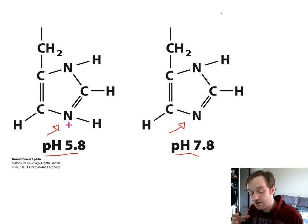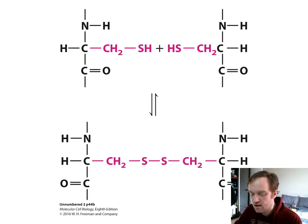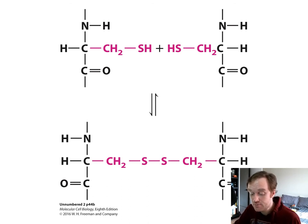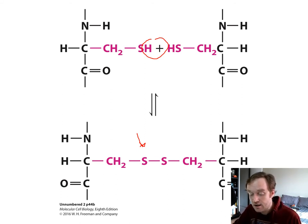pH is very important in maintaining the actual function, structure, and activity of proteins. In addition to dehydration reactions, two adjacent sulfhydryl groups can also be oxidized. When this oxidation reaction occurs, each releases a proton and an electron, forming a covalent disulfide bond. These two side chains release a proton and electron each to form this disulfide bond.